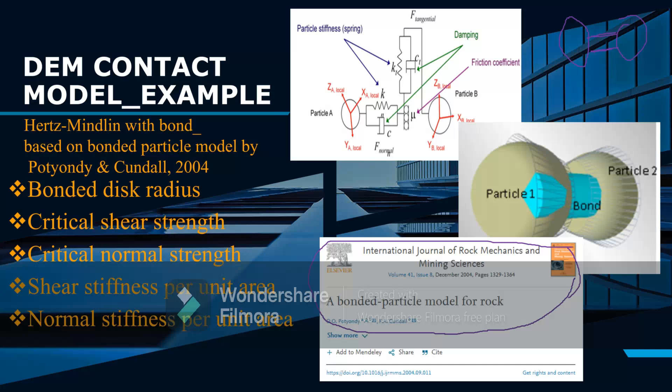The particles in the original Hertz-Mindlin model have purely frictional interaction. When we introduce a bond, this bond needs to have certain properties. It is represented by stiffness and some damping properties.